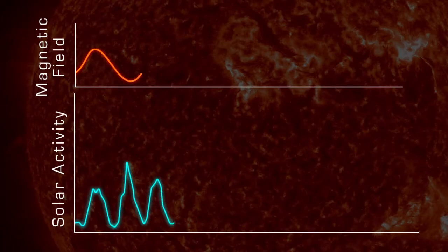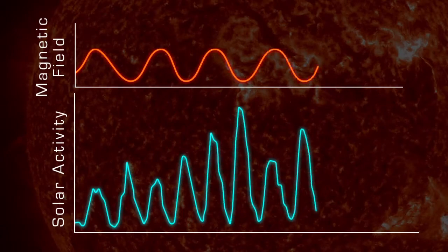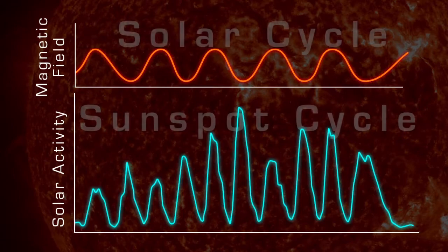The Sun's 11-year cycle is a symptom of a longer 22-year cycle called the solar cycle, or Hale cycle, which affects the Sun's magnetic fields.